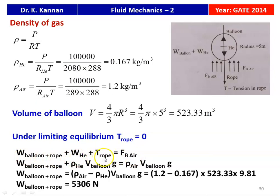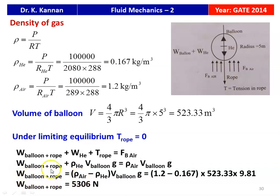Weight of the balloon plus rope, plus weight of the helium, equals the upward force by the air. With tension on the rope equal to zero, weight of the balloon plus rope equals (density of air minus density of helium) times volume of balloon times g. Substituting: (1.2 minus 0.167) times 523.33 times 9.81 equals 5306 Newton. So the weight of the balloon plus rope equals 5306 Newton.